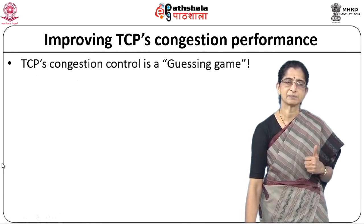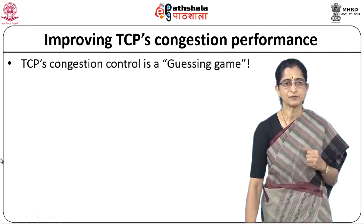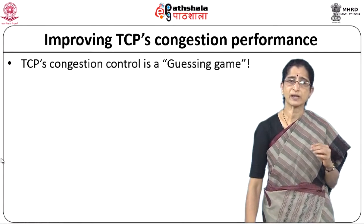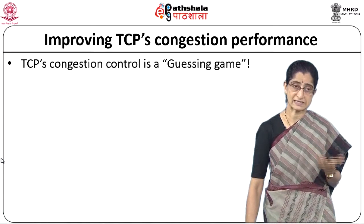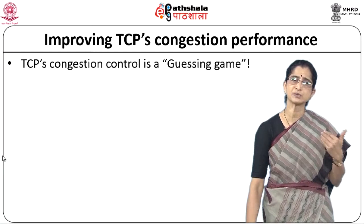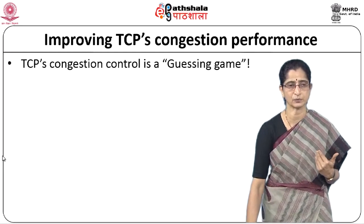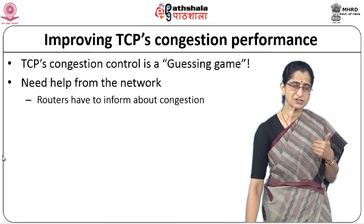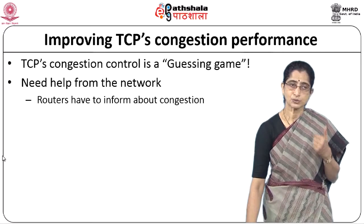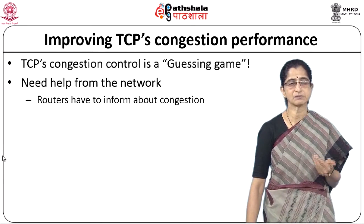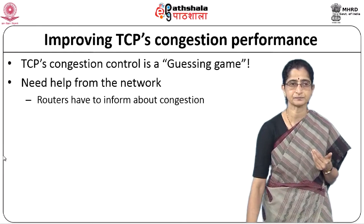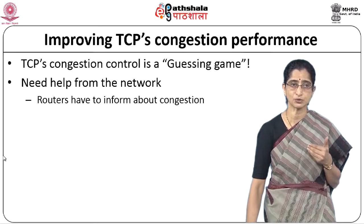Looking at TCP's congestion performance, TCP tries to do a guessing game. It assumes that whenever a packet is lost, it must be because of congestion, and tries to do congestion control by reducing the window size and the amount of data sent into the network. The question is: if routers could inform end systems about congestion, would TCP be able to perform better? If we could do that, our congestion performance could definitely be improved.